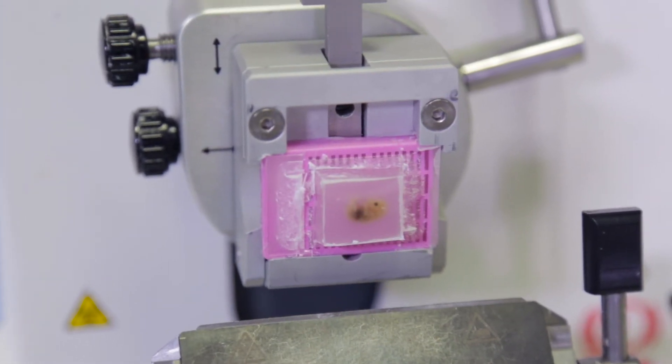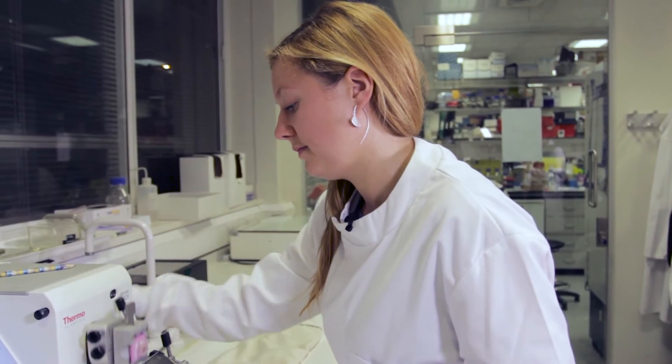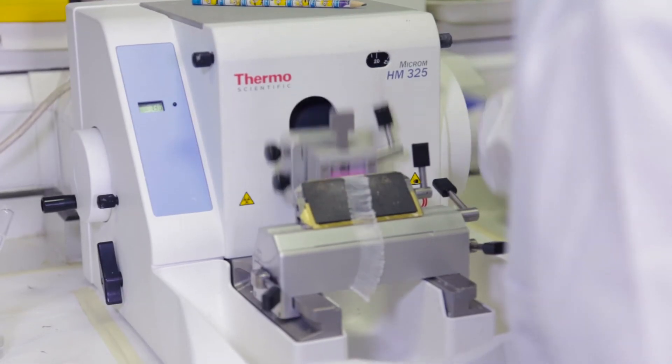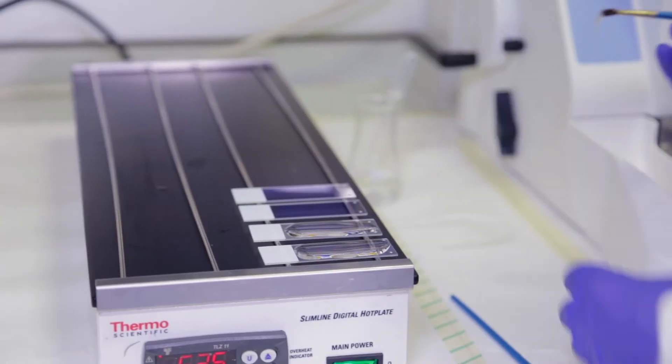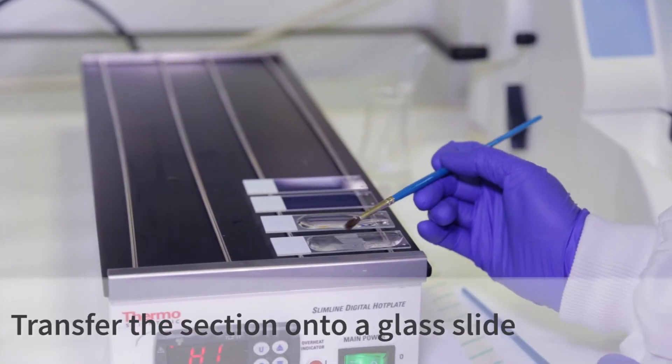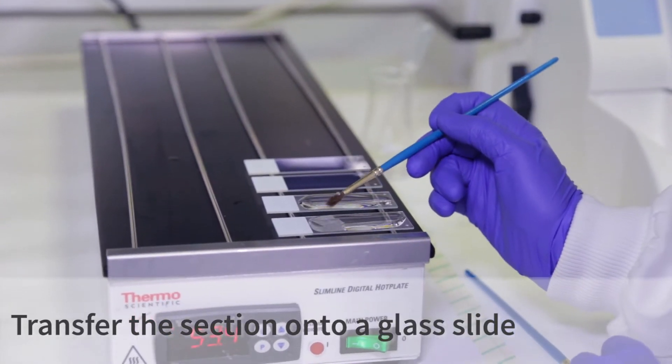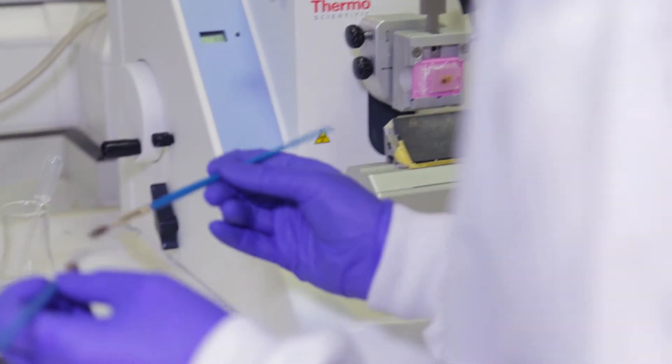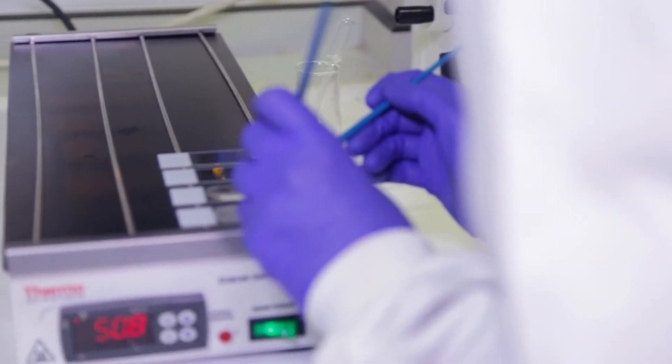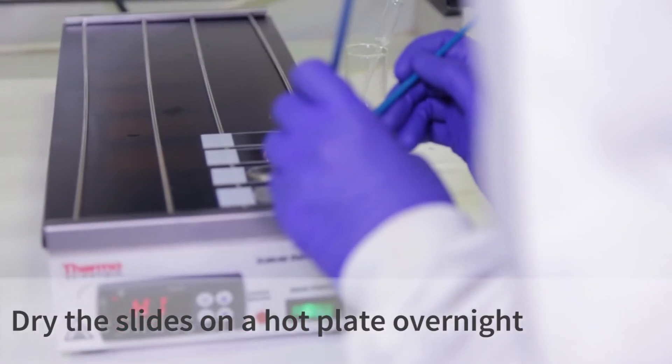A microtome is used to cut tissue that has been embedded in paraffin wax. I cut my sections at 7 microns thick. The sections are placed on glass slides that have had water pipetted onto them. The slides are heated on a hot plate. The slides are left on the hot plate until the water has dried and the sections are attached to the slide.